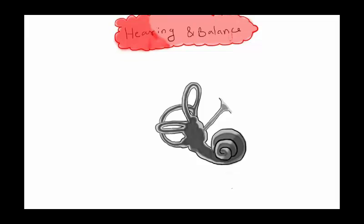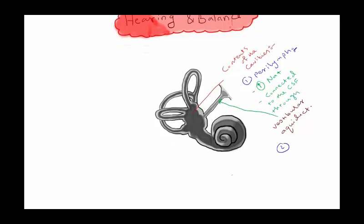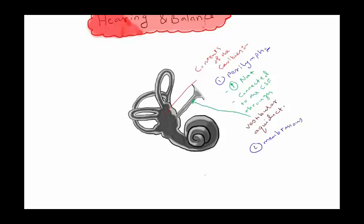These are the cavities within the bony part. The fluid inside is called perilymph, which has a high concentration of sodium and is directly connected with the CSF through a structure called the vestibular aqueduct. The membranous part swims in this perilymph.